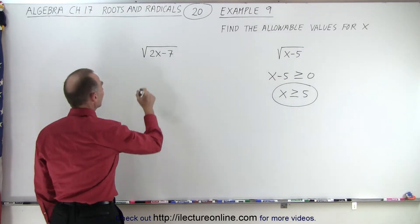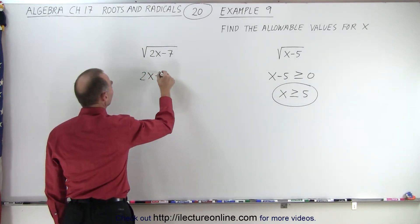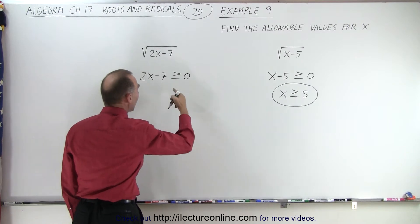Here, the same thing. Here we have to make sure that 2x minus 7 is greater than or equal to 0. If it's not, we have an imaginary number.